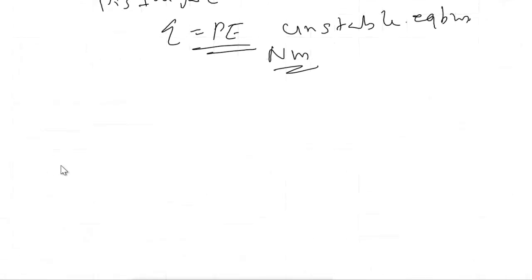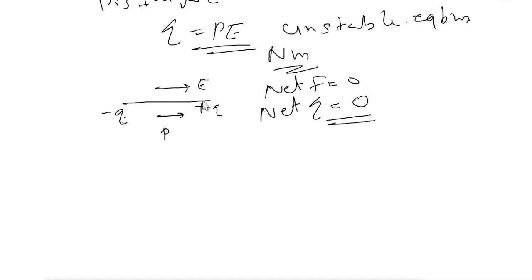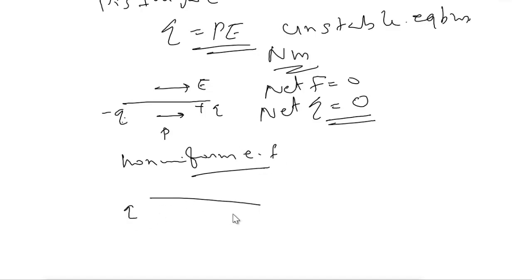The unit of torque is Newton meter. When the dipole is in a uniform electric field with the dipole oriented along the field direction — minus q on one side, plus q on the other — the net force is qE − qE = zero, and the net torque is also zero. So in a uniform electric field, both net force and net torque on the dipole are zero.